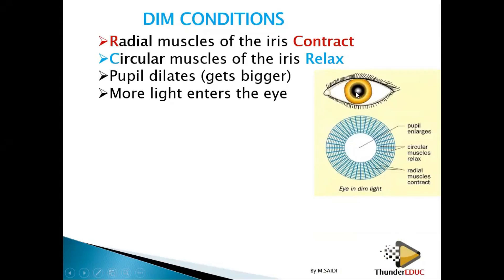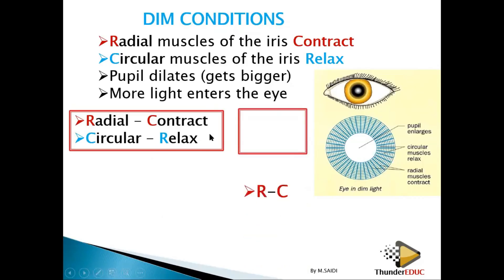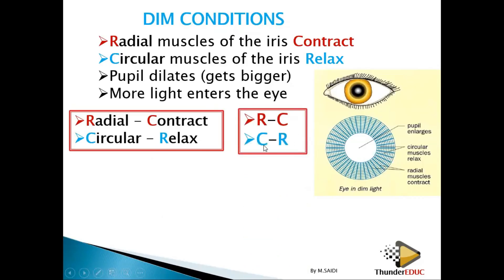Comparing dim light to bright light, the pupil in dim light is big. In dim light, R goes with C and C goes with R — they are mixed. A mnemonic: 'I'm bright like a star, I don't mix things up.' In bright light, R goes with R and C goes with C. In dim light, because things are mixed up, radial contracts and circular relaxes.